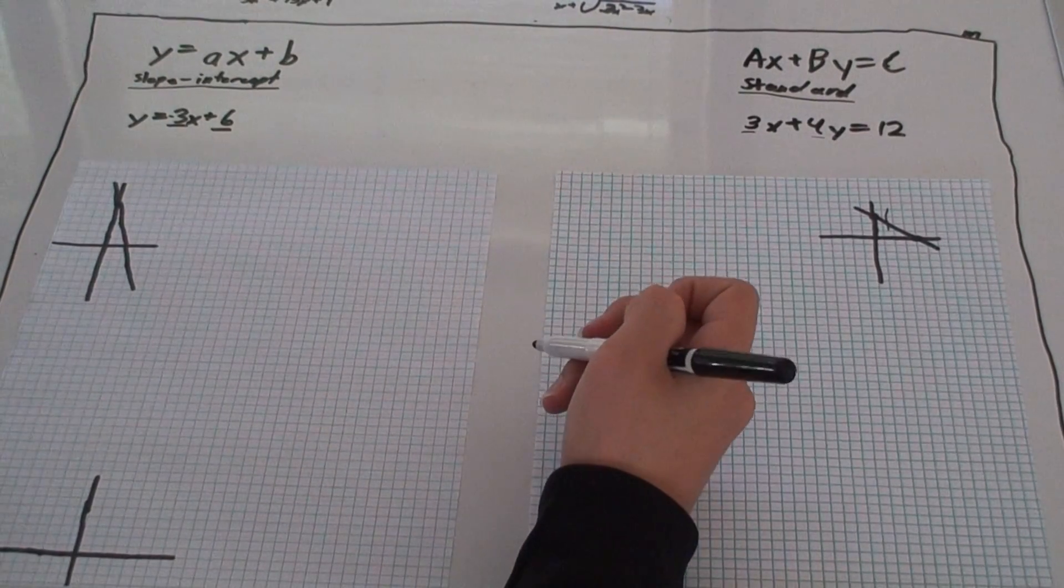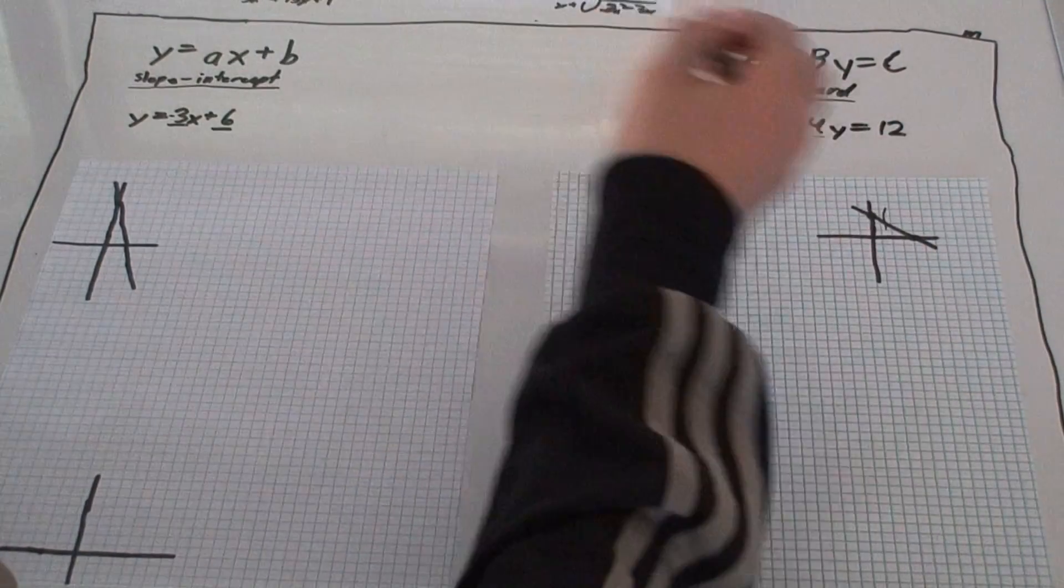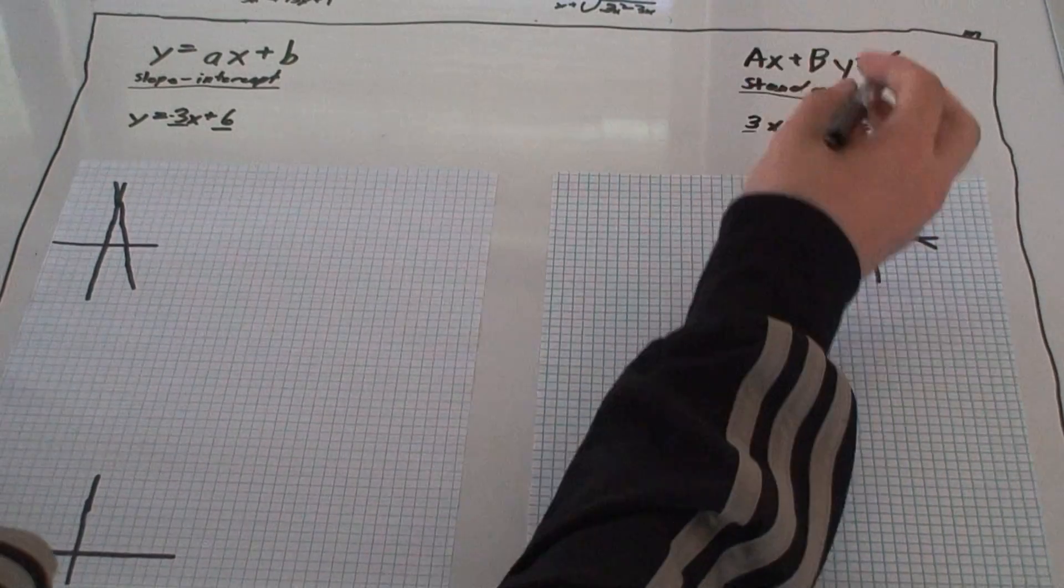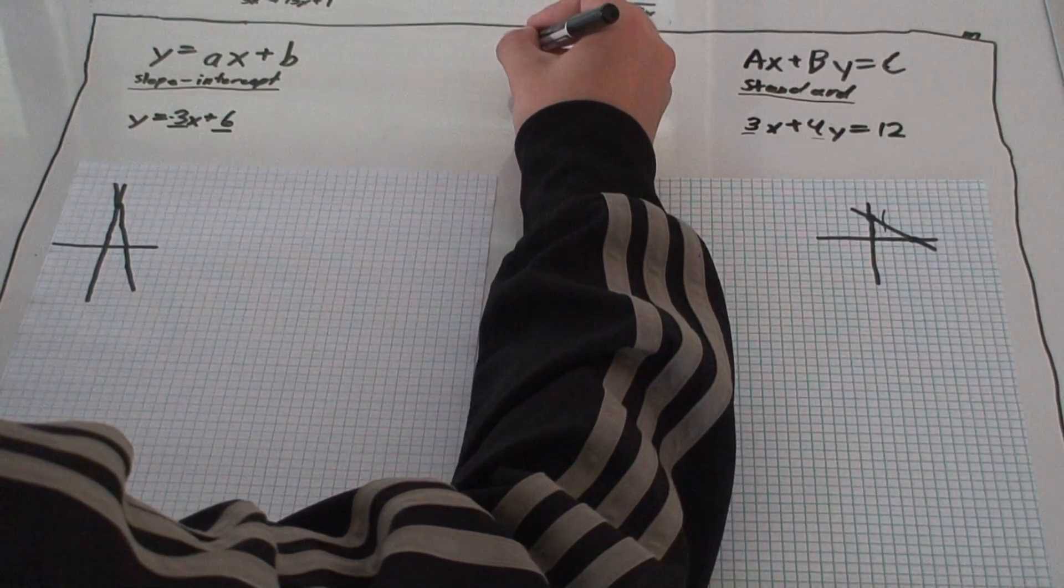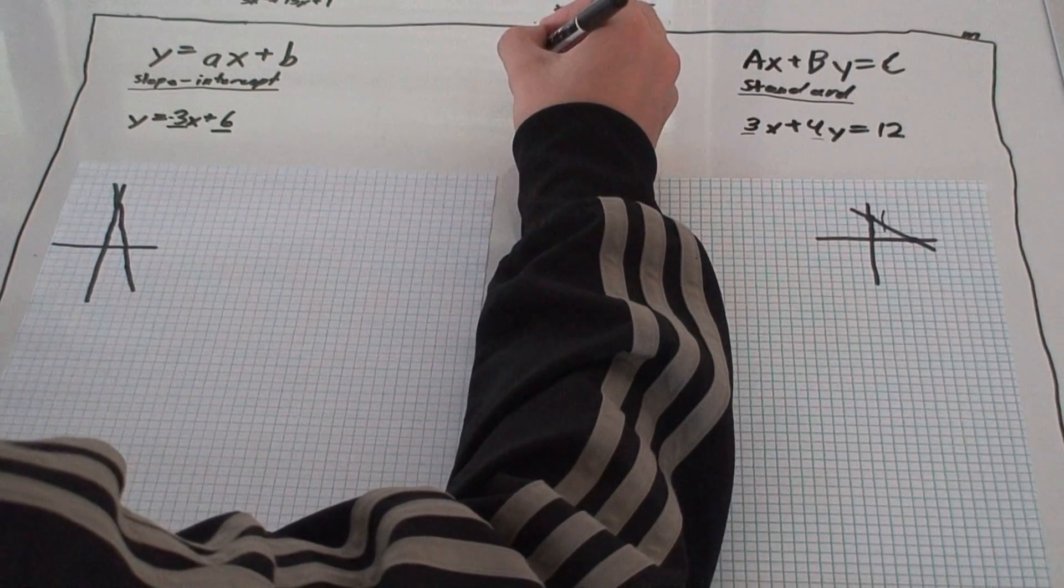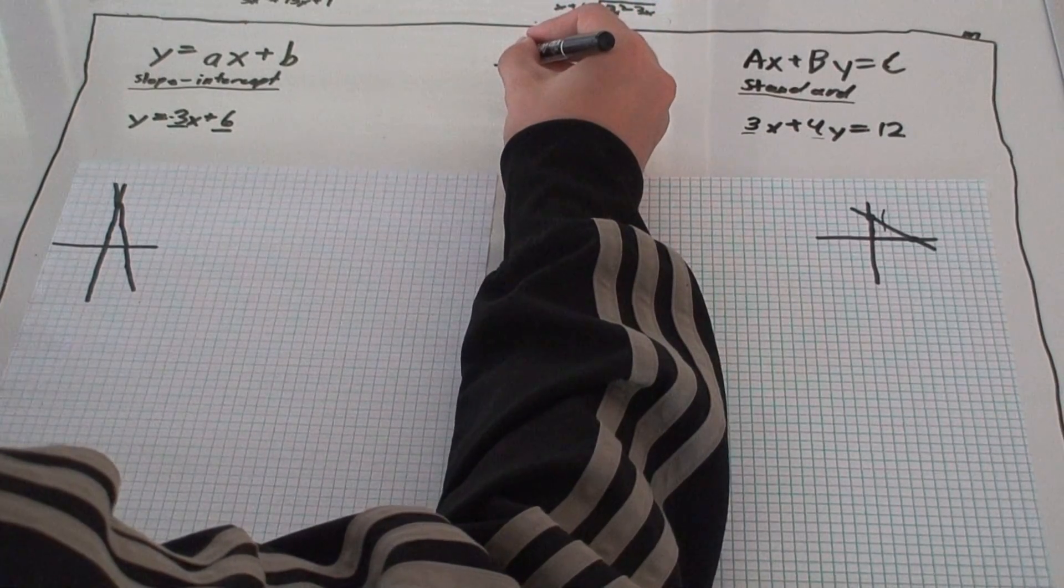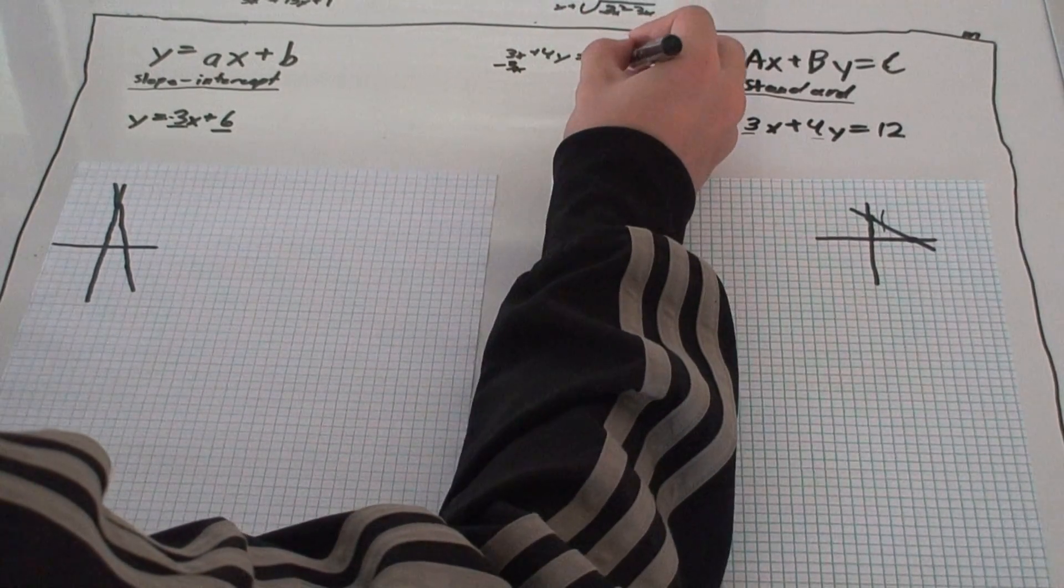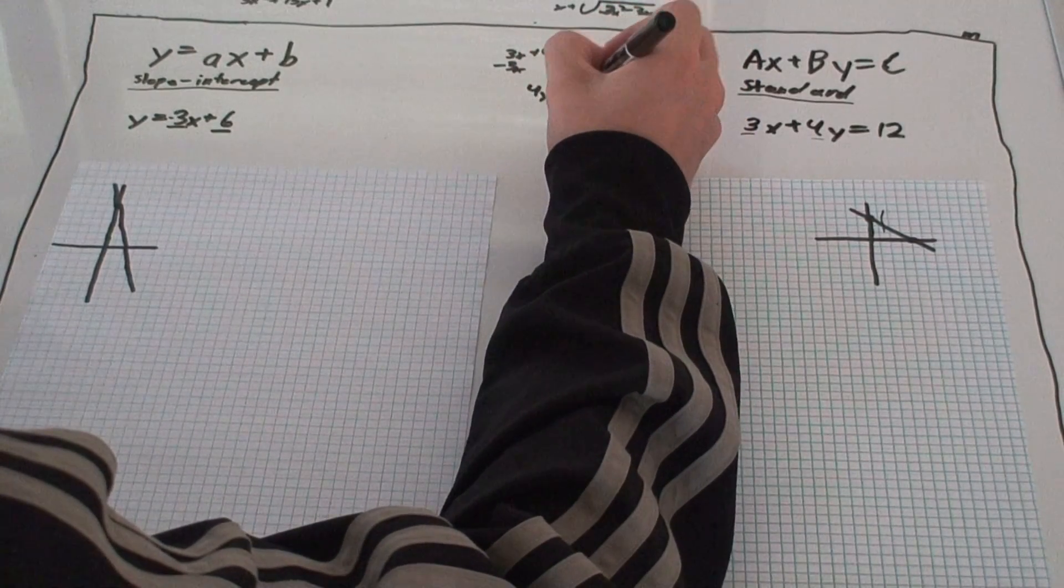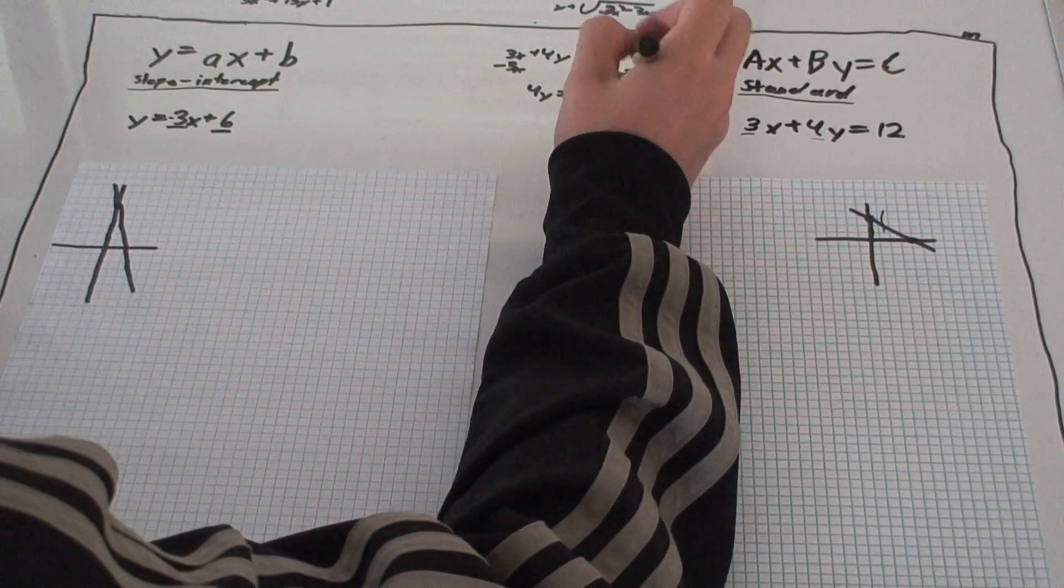And, it's just a simple way to switch between them. To go from standard to slope-intercept, you solve for the y value. So, we have 3x plus 4y is 12. We would want to isolate our variable, get rid of the 3x.